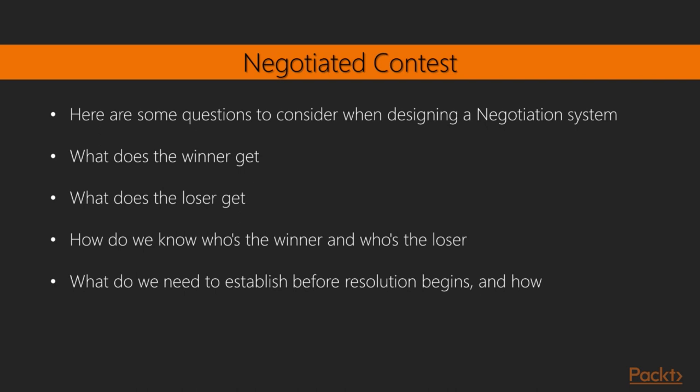There are three parts to a negotiation pattern. Initiation: the phase in which a character action is introduced into the game world. Execution: the phase in which the success or failure of a character action is determined. Effect: the phase in which the results of a character's actions are determined. Some questions to consider when designing a negotiation system: What does the winner get? What does the loser get? How do we know who's the winner and who's the loser? What do we need to establish before resolution begins? In this video we have successfully learned about patterns in RPG.